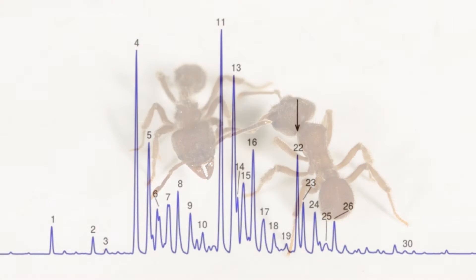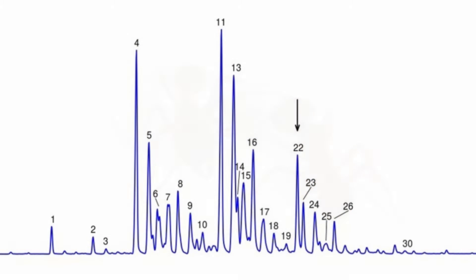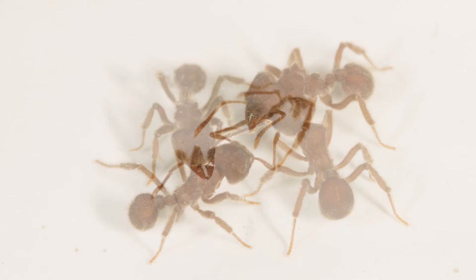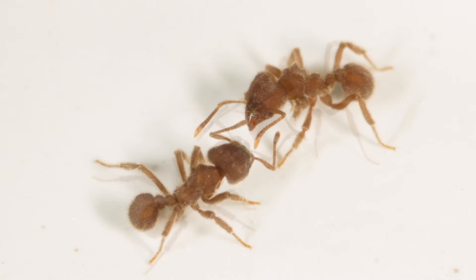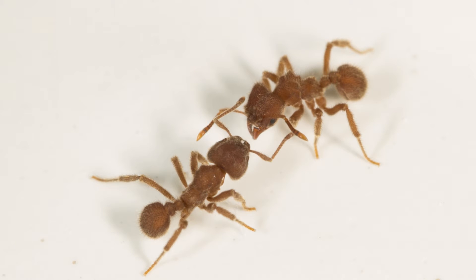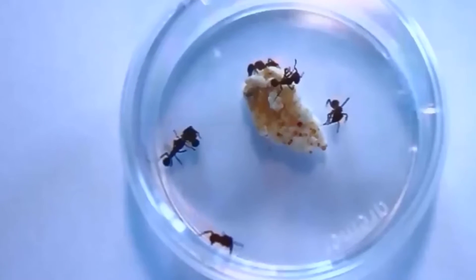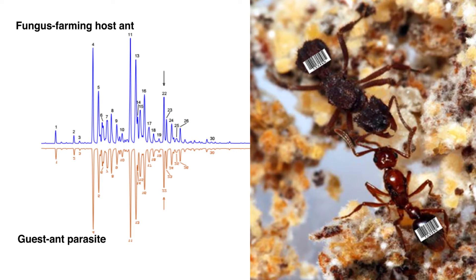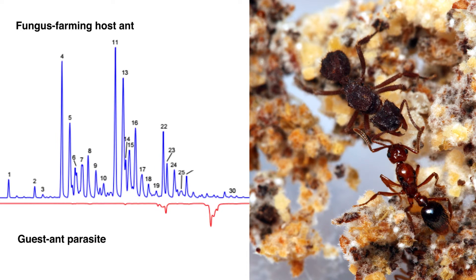Ants detect differences in hydrocarbon-based chemical profiles found on the outer surface of each ant. These profiles allow ants to determine who is a nest mate and who is not. Social parasites enter the host nest and live with their host colony by mimicking these surface chemicals or maintaining a simplified and reduced chemical profile.